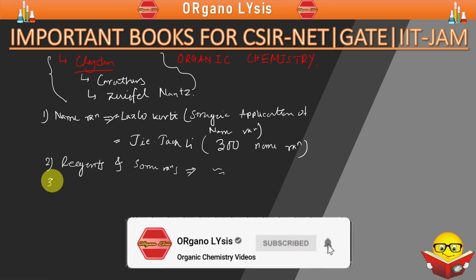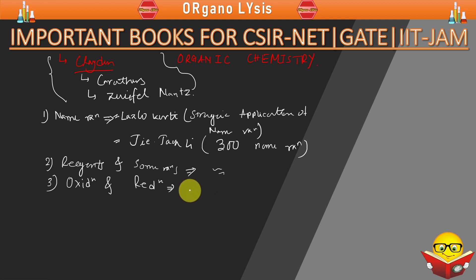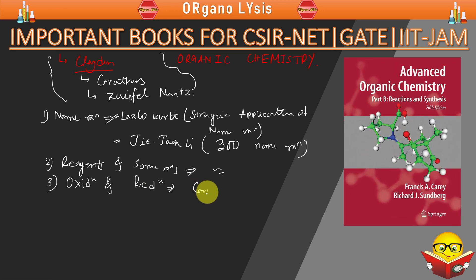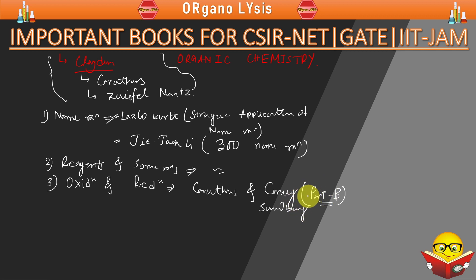The next topic is oxidation and reduction. If you want to know these two topics, you should refer Carruthers and Carey-Sundberg. These two books are very important — one is Carruthers and the other is Carey-Sundberg Part B. These two books contain two different parts, Part A and Part B. Part B contains the oxidation-reduction section, so you should refer to that.